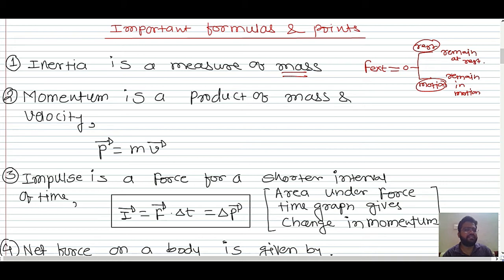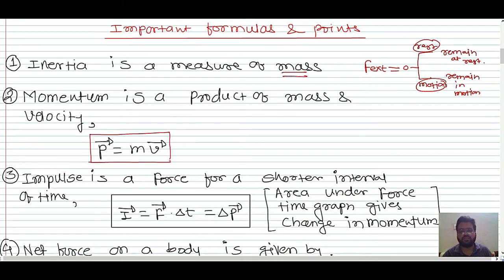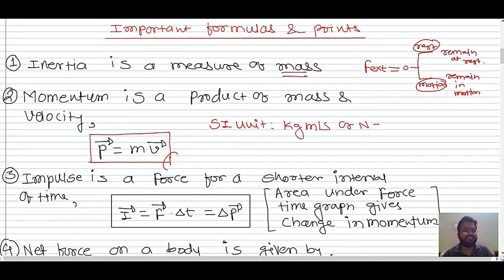Now, momentum is the product of mass and velocity: p̄ = m × v̄. It is defined as the quantity of motion present in a body. Its SI unit is kg·m/s, which can also be written as N·s. Momentum is a vector quantity, so it is always in the direction of velocity.